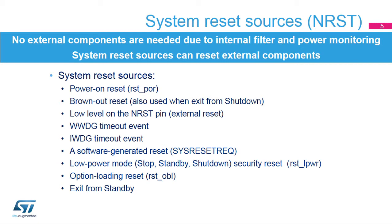The first type of reset is the system reset, which resets all the registers except certain registers for the reset and clock controller and power controller. It also does not reset the backup domain. Many sources can generate a system reset: an invalid voltage on the VDD or VFBS MPS supply; an invalid voltage on VDD due to the brownout function, which allows the user to choose its own threshold levels for the VDD supply.